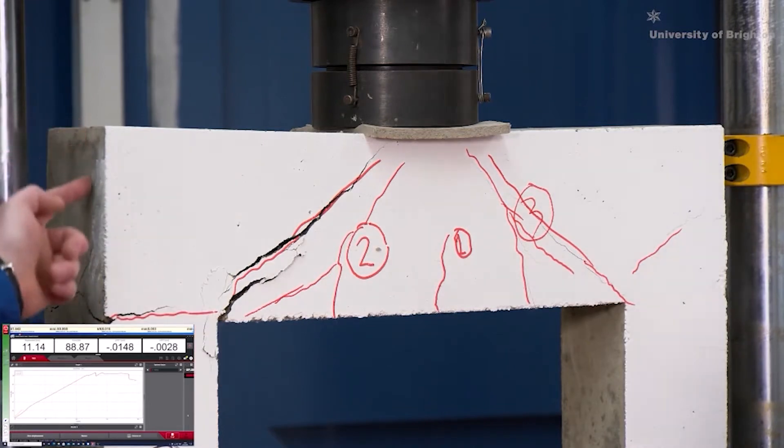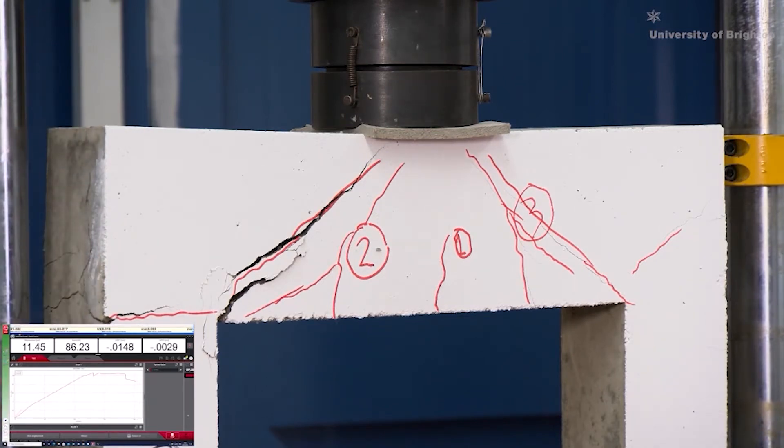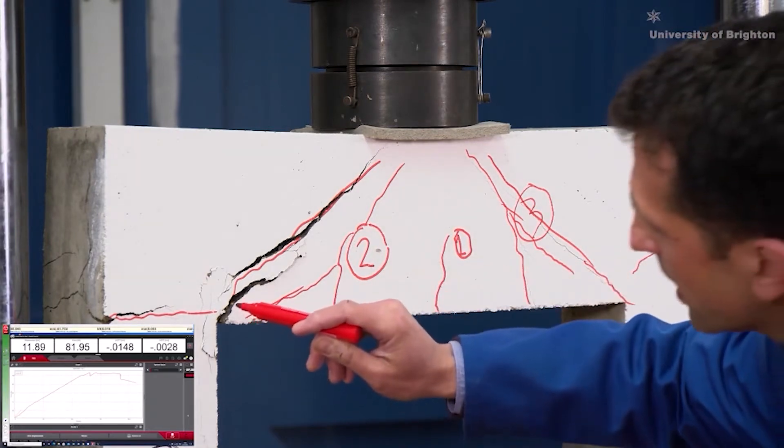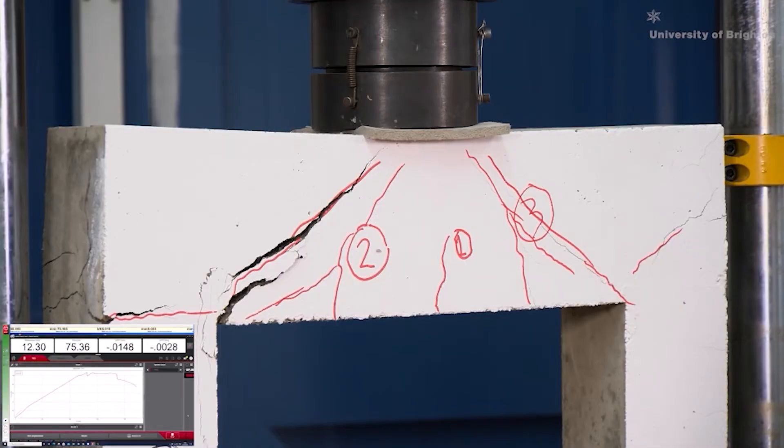Unfortunately, just off the camera here, you can't see these cracks have appeared on the edge here. And you can also hear the concrete cracking and bits falling off of it. The load is dropping a lot. And there is a crack opening at this point. And now it has been considered that the specimen has failed.